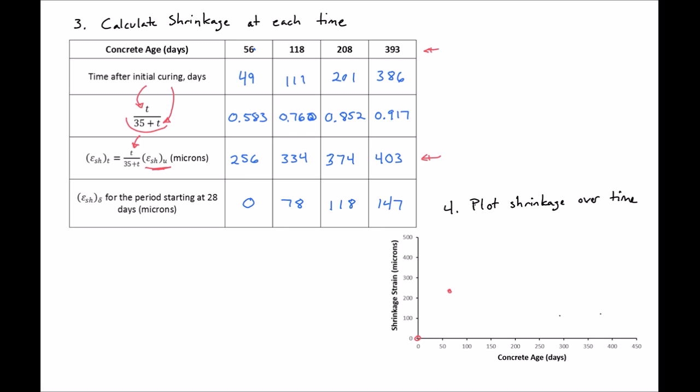At 118, we'll be about at 334, we'll be right about there. At 208, we'll be at 374, so we'll be right about there. And then at 393, we'll be at 403, so we'll be right about there.